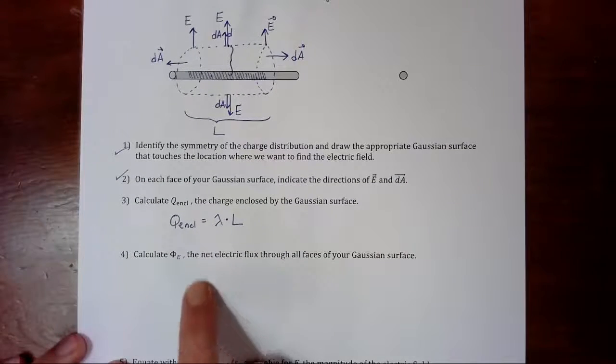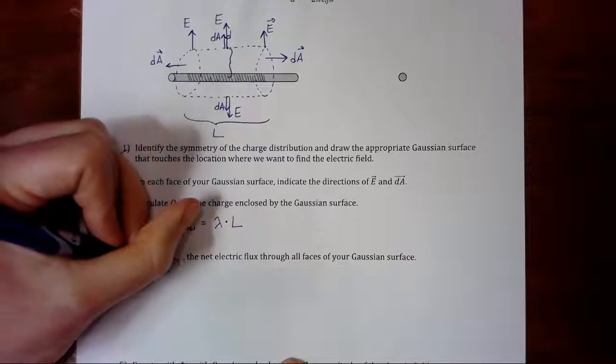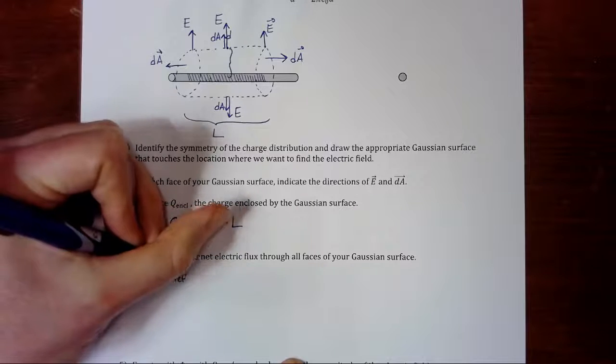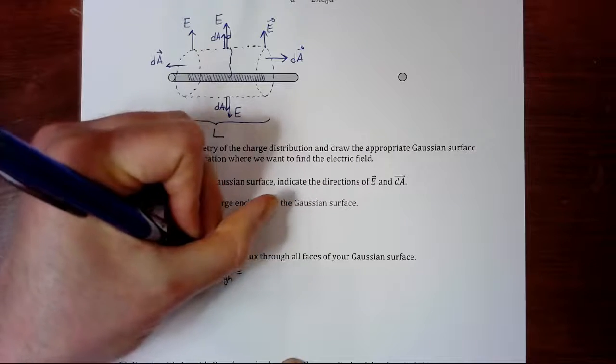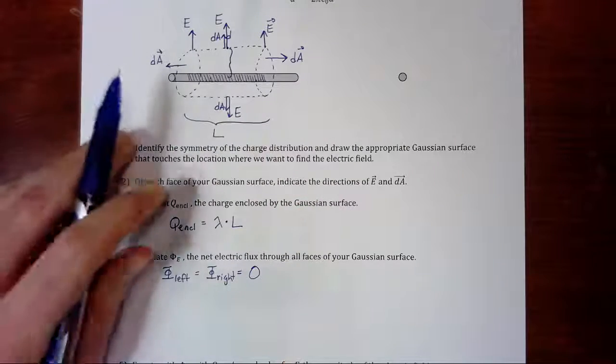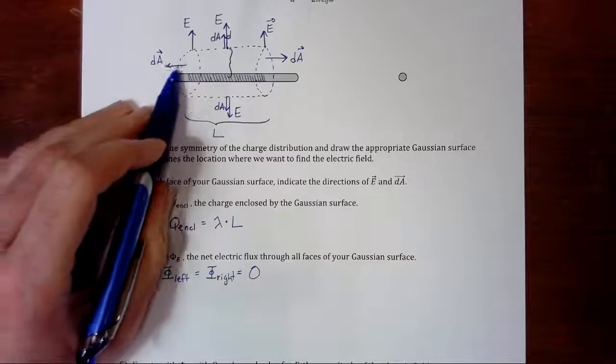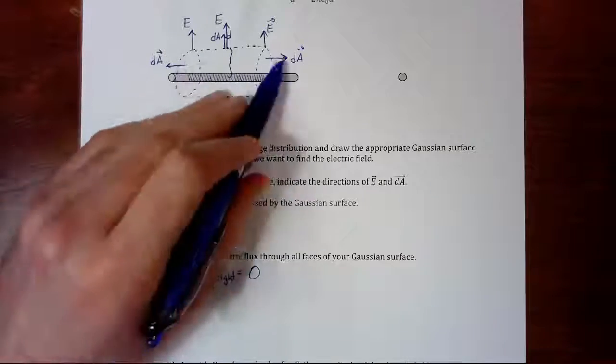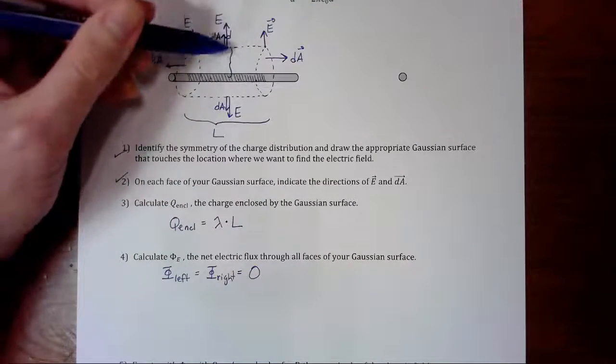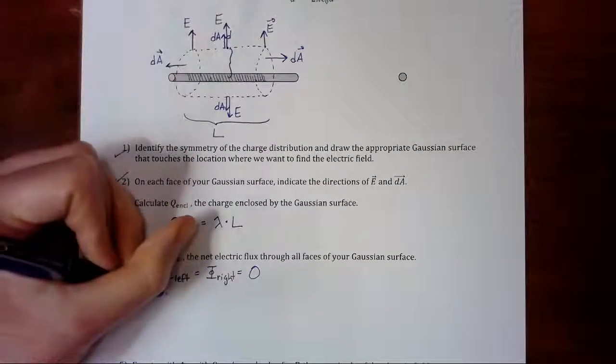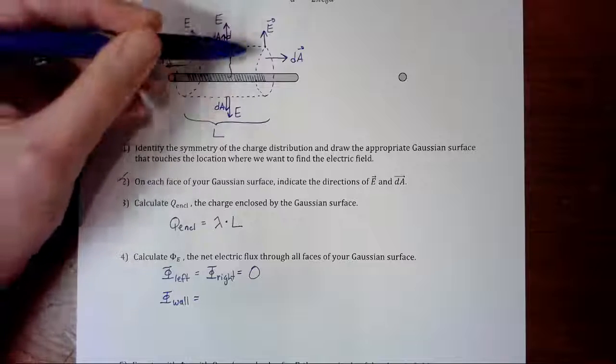Next, calculate the electric flux through all faces of your Gaussian surface. Well, the flux through the left end and the flux through the right end are zero, because the electric field is perpendicular to the area vector. The electric field does not poke out through the left end or the right end. However, the electric field does poke out through the wall of the cylinder, so you have to find the flux through the wall.